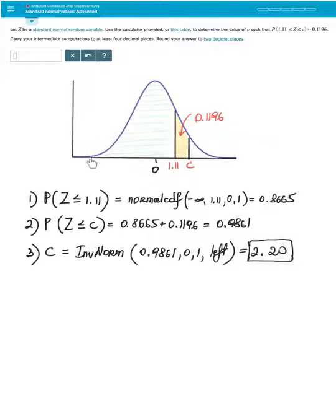So I have a standard normal curve and my horizontal axis where I'm going to label my Z scores. The normal curve is centered at zero and I have two Z scores to consider. The area of 0.1196 is between 1.11 and unknown Z score of C. So this time we have to be a little more creative to find what is the Z score that satisfies these conditions.